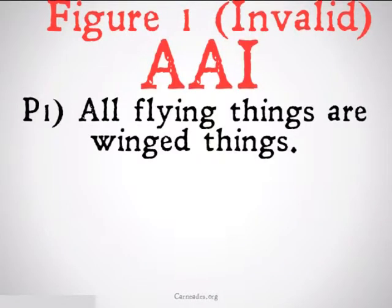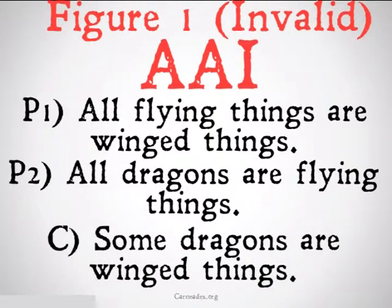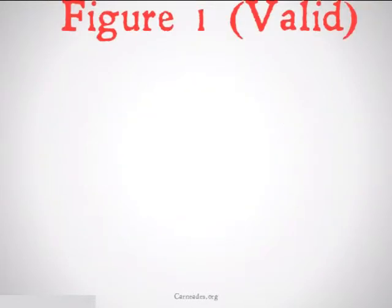An invalid version would be: all flying things are winged things, all dragons are flying things, therefore some dragons are winged things. This is actually going to be invalid. Why? Because the only thing that needs to exist — the subject — is dragons, and dragons don't exist. So it's going to be an invalid form of argument.